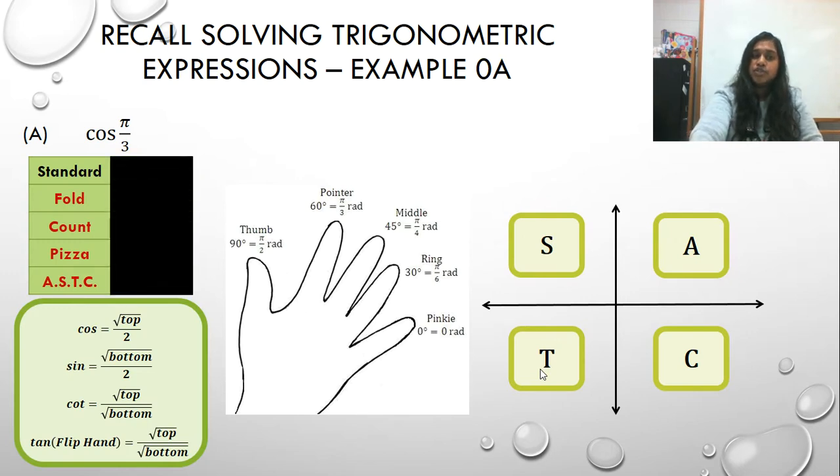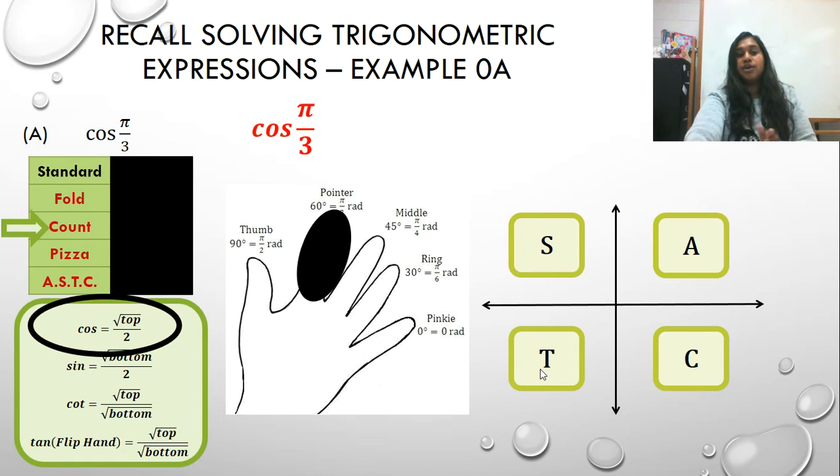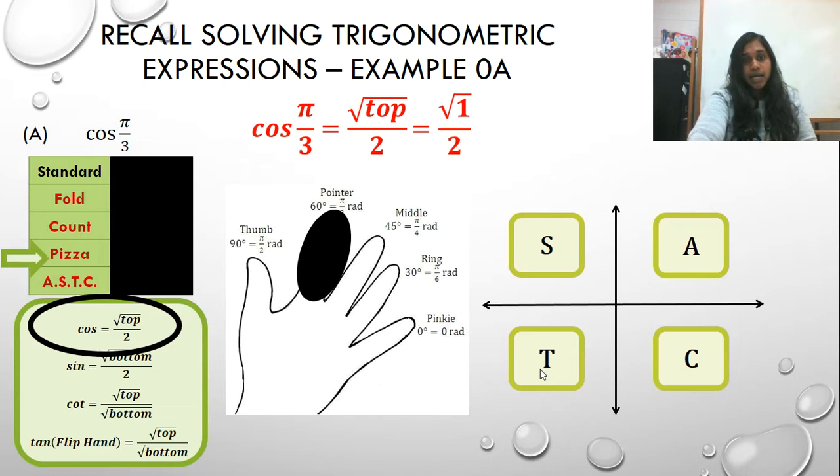So, if I were solving this question using my hand trick, then the first thing I'm going to do is I'm going to fold my finger of pi over 3. Then I'm going to count, and that depends on the formula itself. For cosine, I'm counting from the top. So, I count one finger, and I plug that into the formula, and ta-da, there is my beginning of my answer.